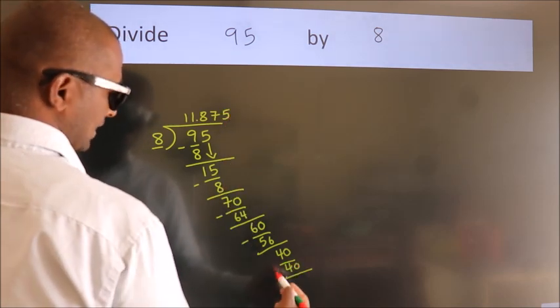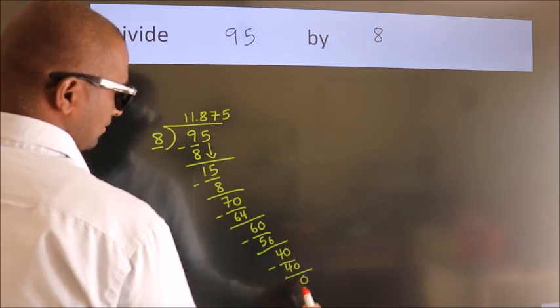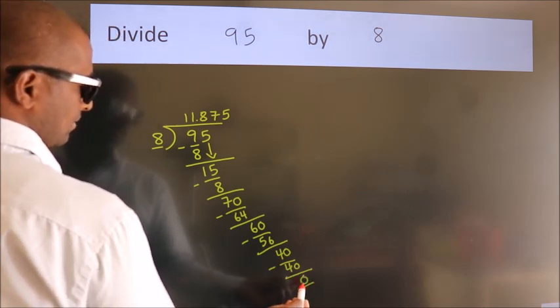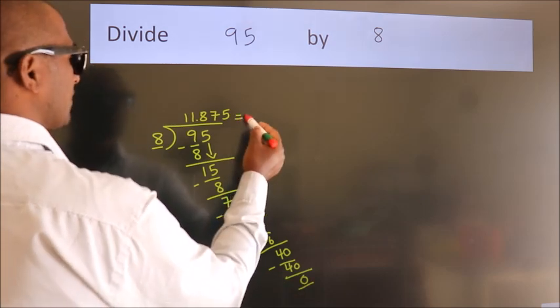Now we subtract. We get 0. Here we got remainder 0. So this is our quotient.